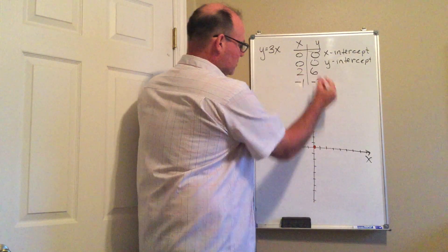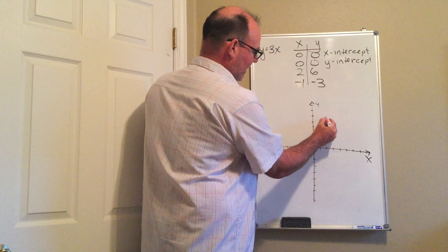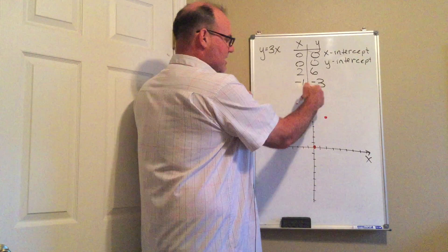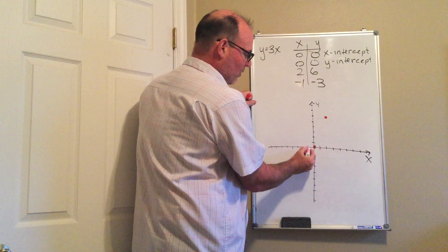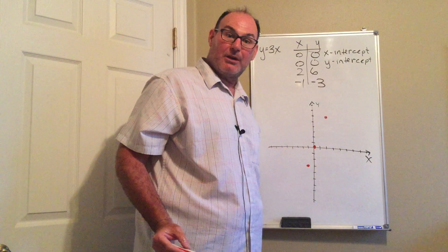And so the point two, six, I go two in the x direction and then two, four, six in the y direction. So I'm going to make a dot right there. Negative one, negative three is negative one in the x direction, negative three. And you can see my points all pretty much line up.